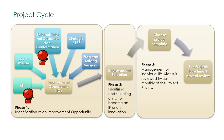A project is only completed in step three when the process has been standardized, the people have been trained and deemed competent to run the improved process or task, and when the operational benefits are realized — that is, improvement in risk, quality, speed, cost, and people engagement and development. When the project leader is finished, she is ready to take on another project.